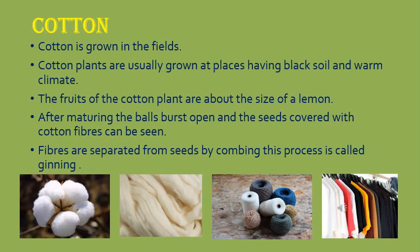Cotton bolls are picked by hand from the field. After picking, seeds inside the cotton bolls are separated by combing. The process of combing to separate seeds from cotton bolls is called ginning of cotton. Ginning of cotton is traditionally done manually, but these days machines are used. The machine used for ginning is called a ginning machine. When cotton is compressed into bales, the weight of one bale is about 200 kg. Cotton bales are then sent to spinning mills.